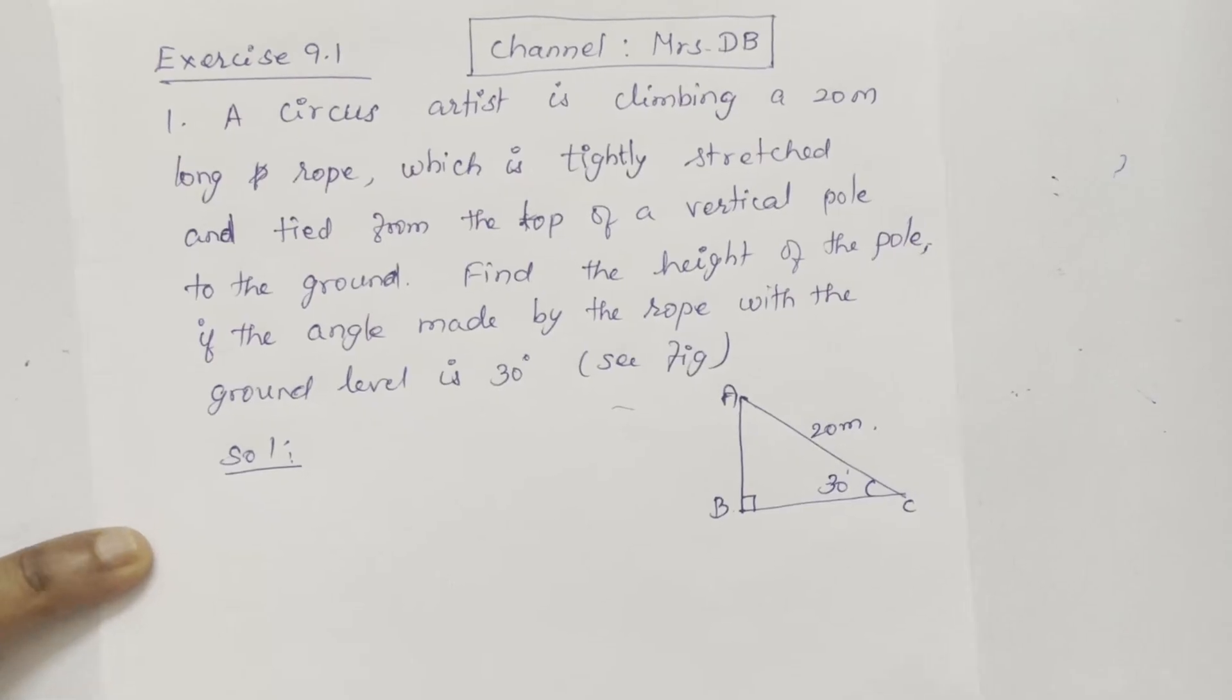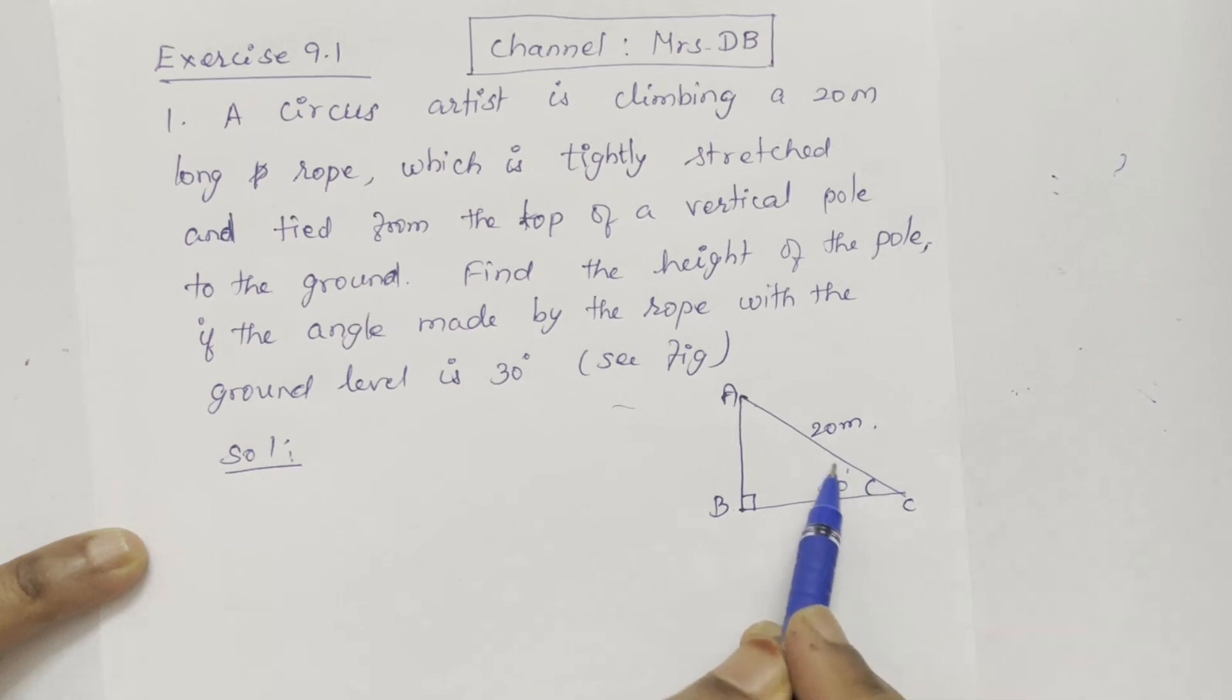A circus artist is climbing a 20 meter long rope which is tightly stretched and tied from the top of a vertical pole to the ground. Find the height of the pole if the angle made by the rope with the ground is 30 degrees.